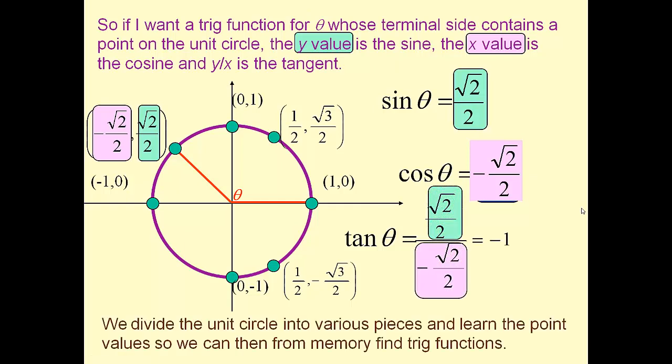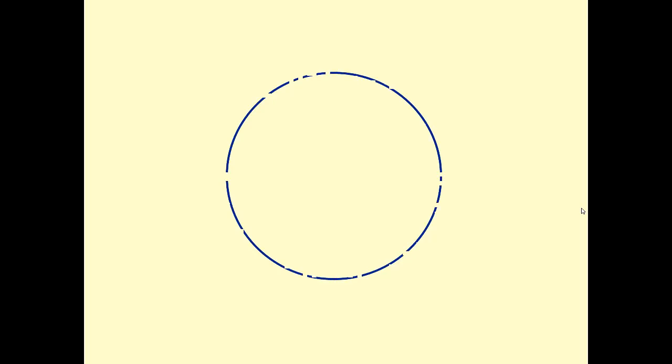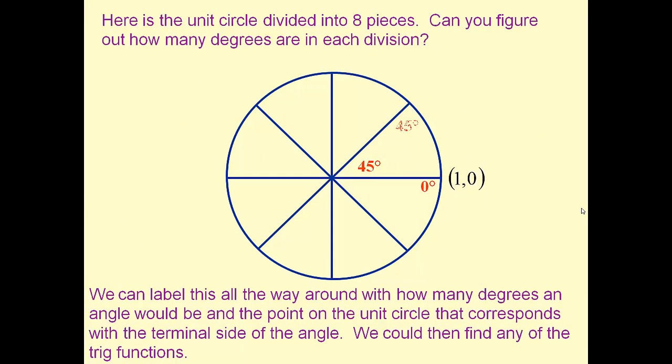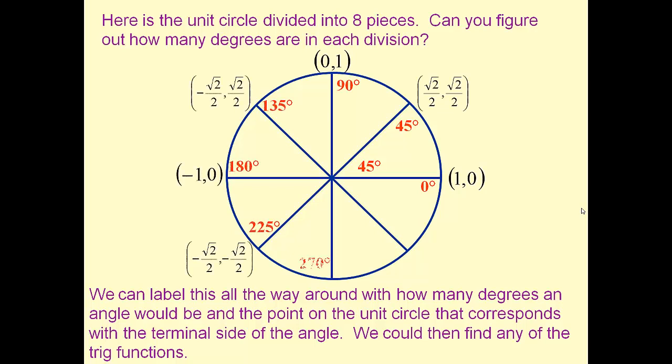If we divide the unit circle into pieces and learn the point values of some of the important points on there, that will help us memorize some important values of the trig functions. So here we've carved up the unit circle into eight pieces. Can you figure out what these angles would be in radians? The circle is 2π all the way around so half way is π. The upper half is divided into 4 pieces so each piece is π/4.